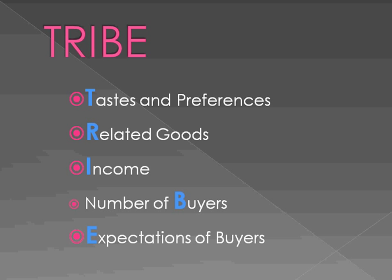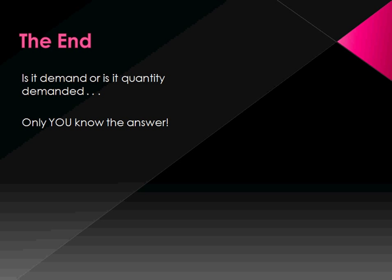What you end up with is a little acronym to help you remember the determinants of demand. That acronym is TRIBE: taste and preferences, related goods, income, number of buyers, and expectations of buyers. Those are the things that cause demand to shift — price is not among them. Remember, it's up to you to decide whether it's demand or quantity demanded that shifts.